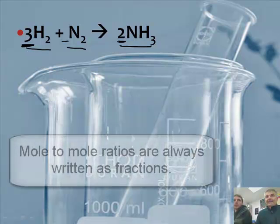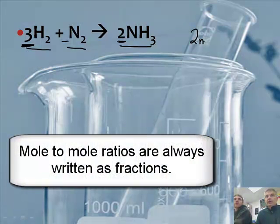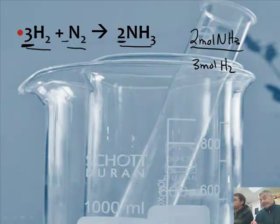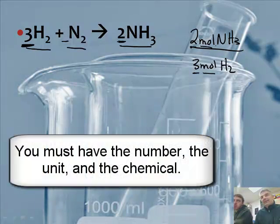So let's build some mole-to-mole ratios. I can say 2 moles of NH3 equals 3 moles of H2. Now here's something very important. Remember we've talked about the naked numbers. You must not just write 2 over 3. In fact, you can't just say 2 moles over 3 moles. No. You have to say 2 moles of NH3 over 2 moles of nitrogen.